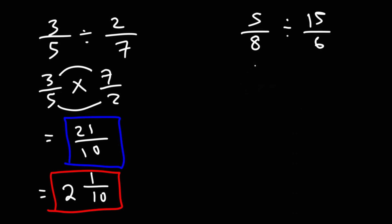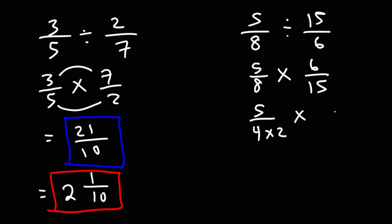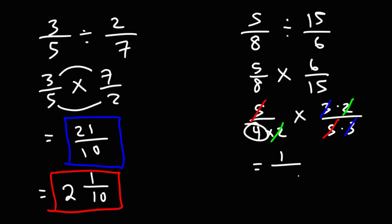Now let's work on the last example. Using keep change flip, let's keep the first fraction, change division to multiplication, and then flip the second fraction. Now we can multiply across, but for this one we can simplify first. 8 is 4 times 2, 6 is 3 times 2, and 15 is 5 times 3. We can cancel a 5, cancel a 3, and cancel a 2. All of the top numbers have been canceled, so there's a 1 left on top. On the bottom we have a 4. So the answer is 1 over 4.